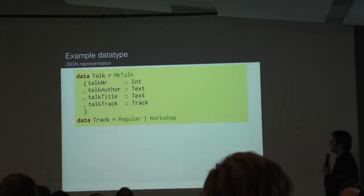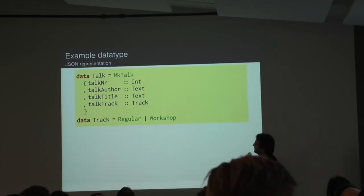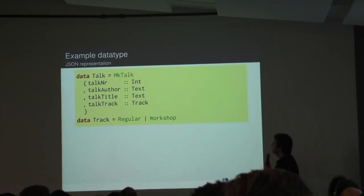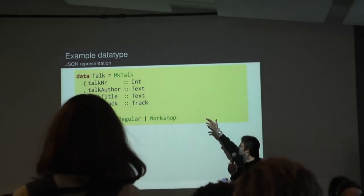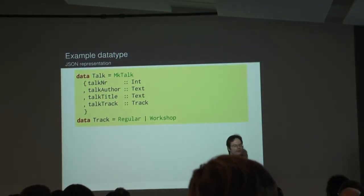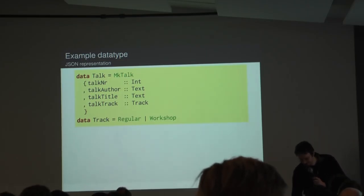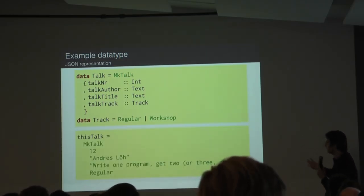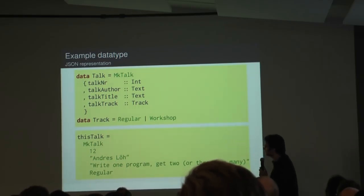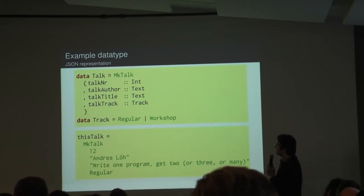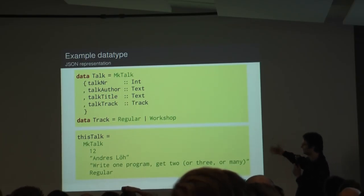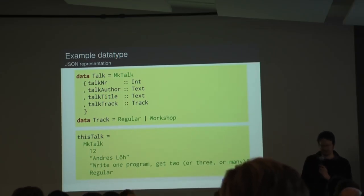Let's look at this in practice. If we have a concrete Haskell data type representing a conference talk — it might have an identifier, an author, a title, and a binary track where a talk can be either a regular talk or a workshop. You can build a concrete value by applying the MakeTalk constructor and passing four arguments. In Haskell, record labels are optional, so you can use them or just pass the four arguments positionally.